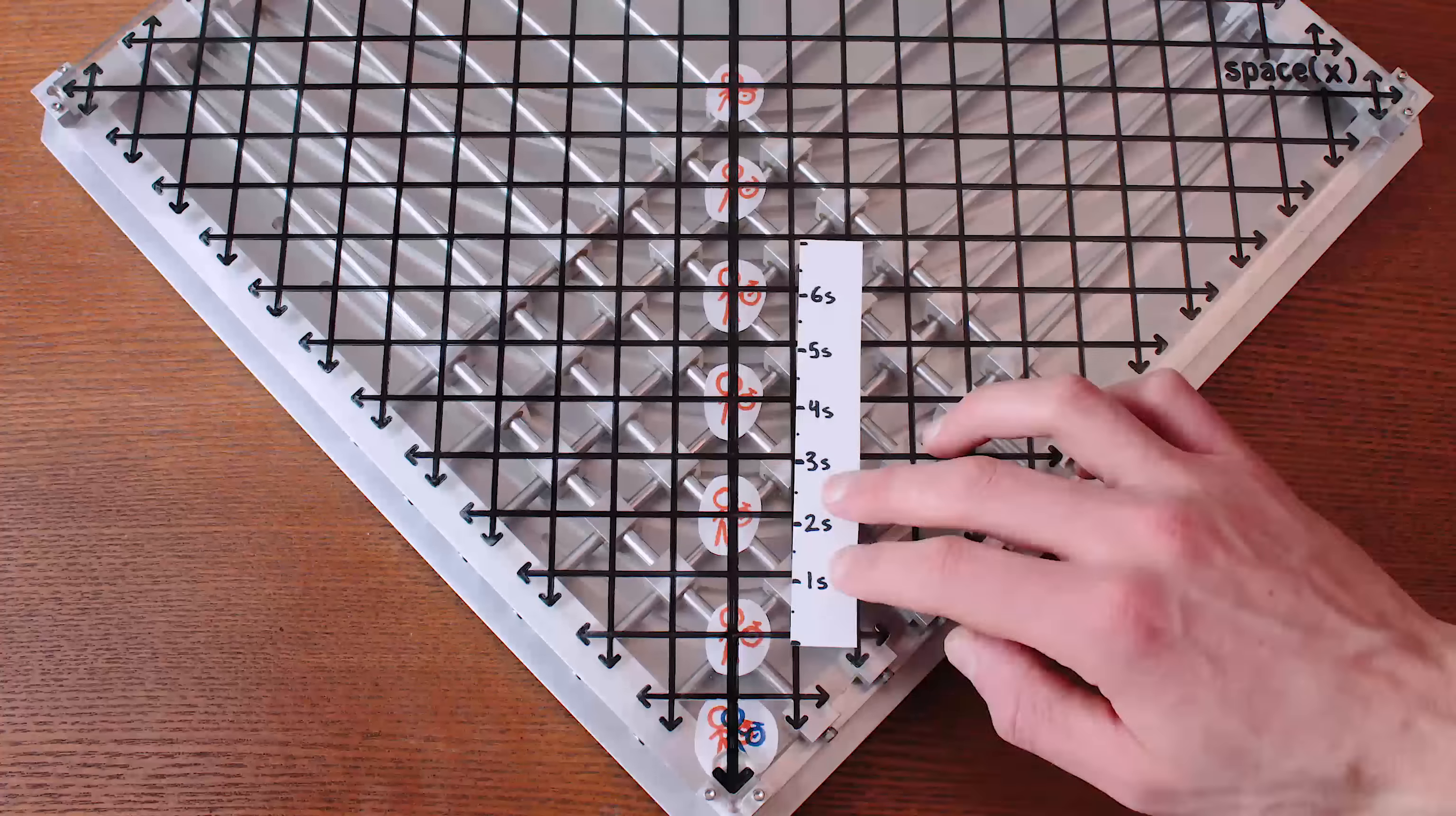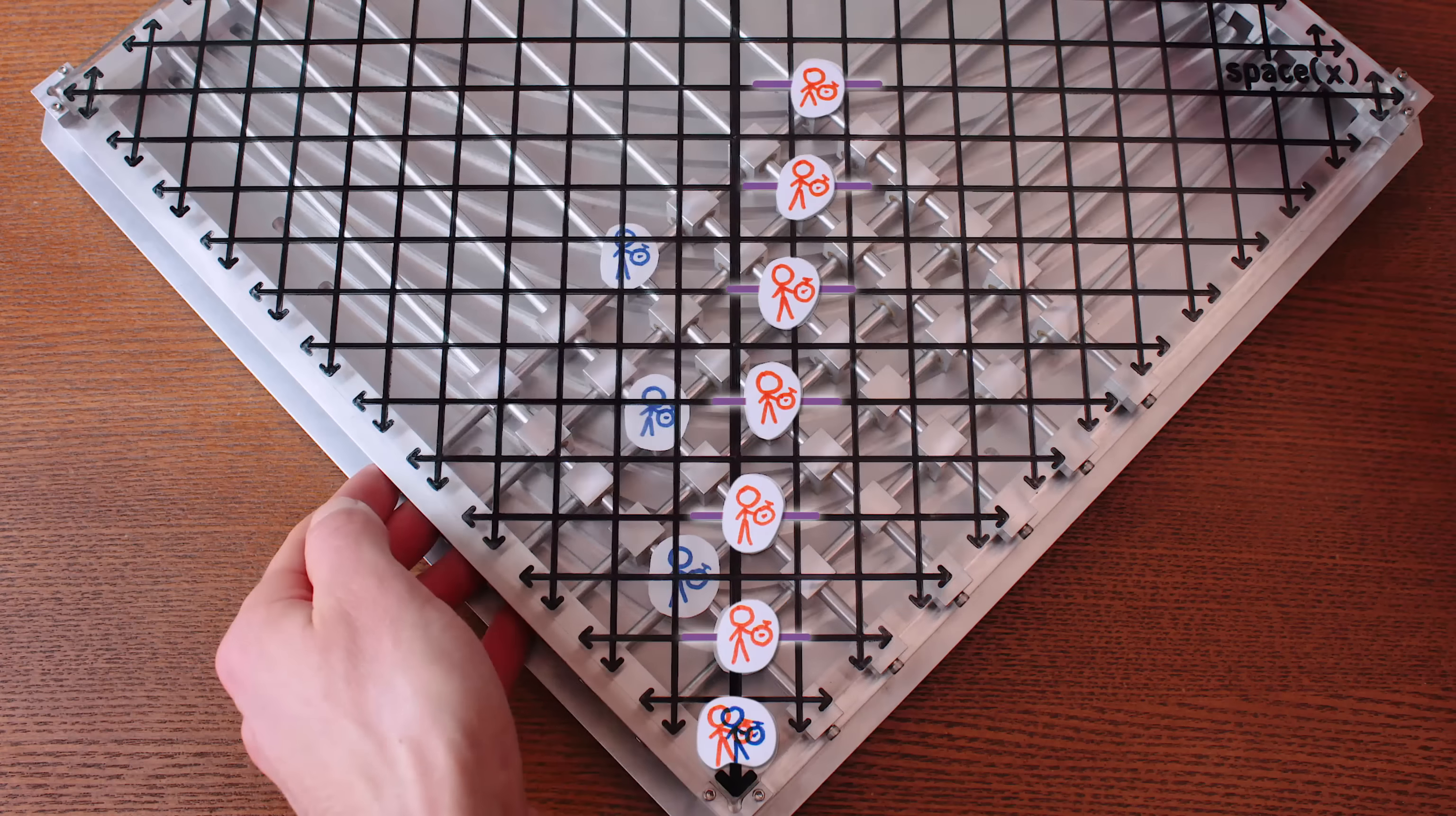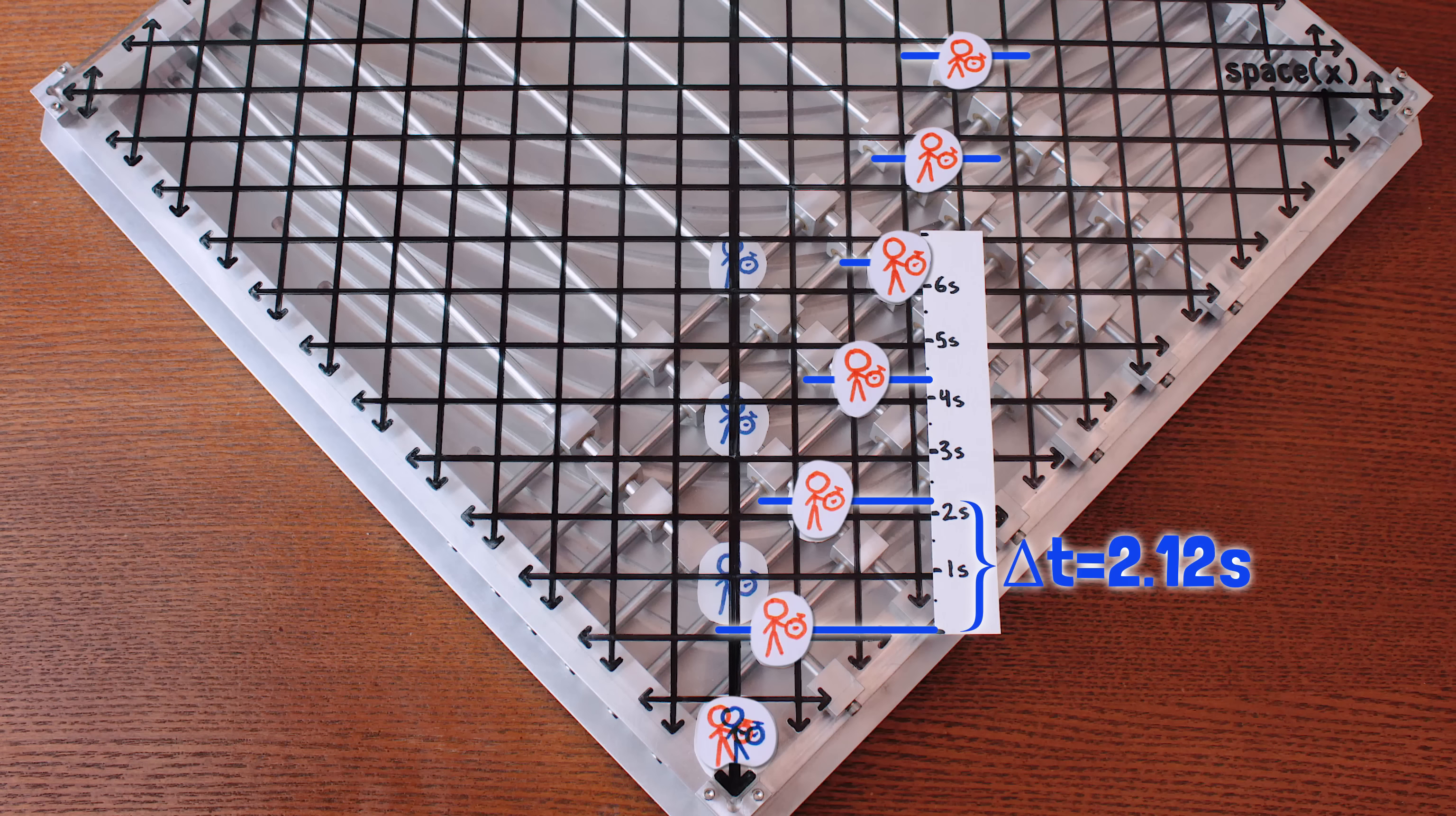Suppose I have a clock with me that ticks every two seconds, but if you're moving at a third the speed of light to my left, then from your perspective the time coordinates at which my clock now ticks are slightly farther apart. According to you, it takes about 2.12 seconds between each tick.